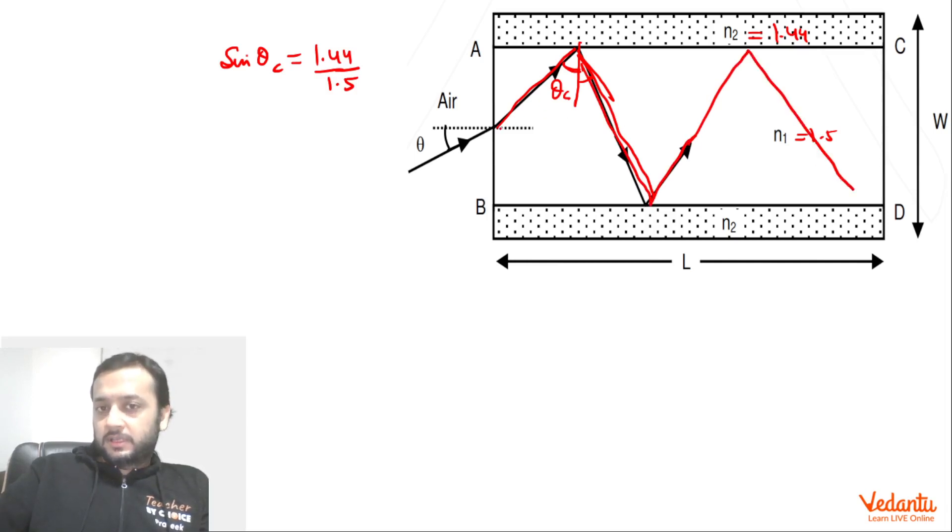Hence we can say that this total length is L. If you see, let's say this is L1, so this is L1 by sine theta c. Let's say this is L2 till here, so this is L2 by sine theta c because this is also theta c, so this will be L2 by sine theta c.